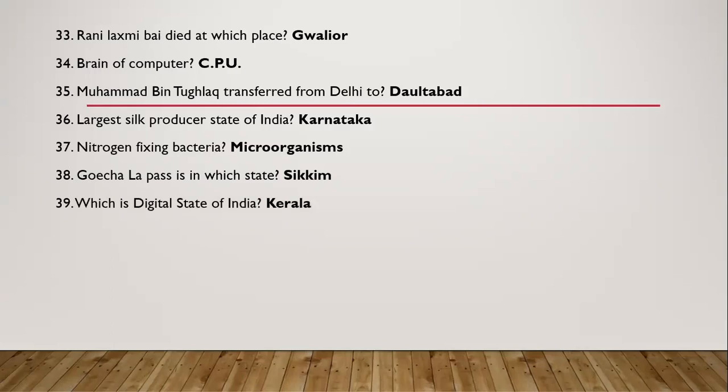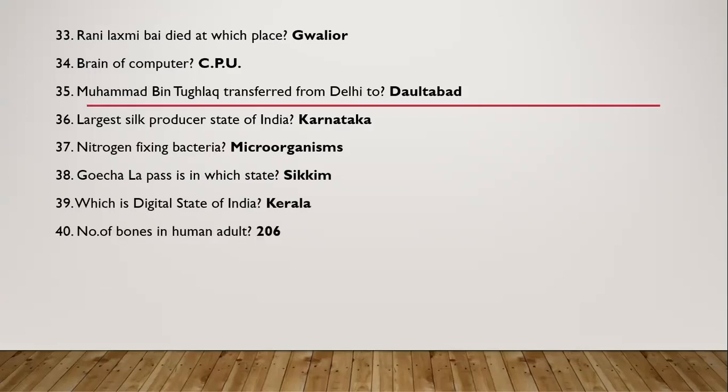Question 39: Which is the digital state of India? The state is Kerala. Question 40: Number of bones in a human adult — the number is 206.